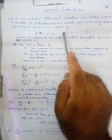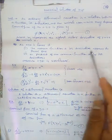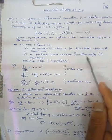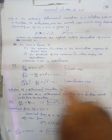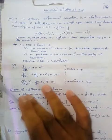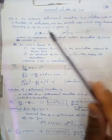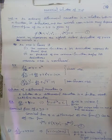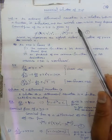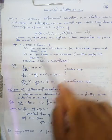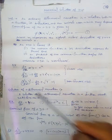That means if the maximum power of each derivative is 1, then the ODE is linear. There should be no product of the unknown function and its derivatives, and no powers involved — only simple linear terms. Otherwise the ODE is non-linear.